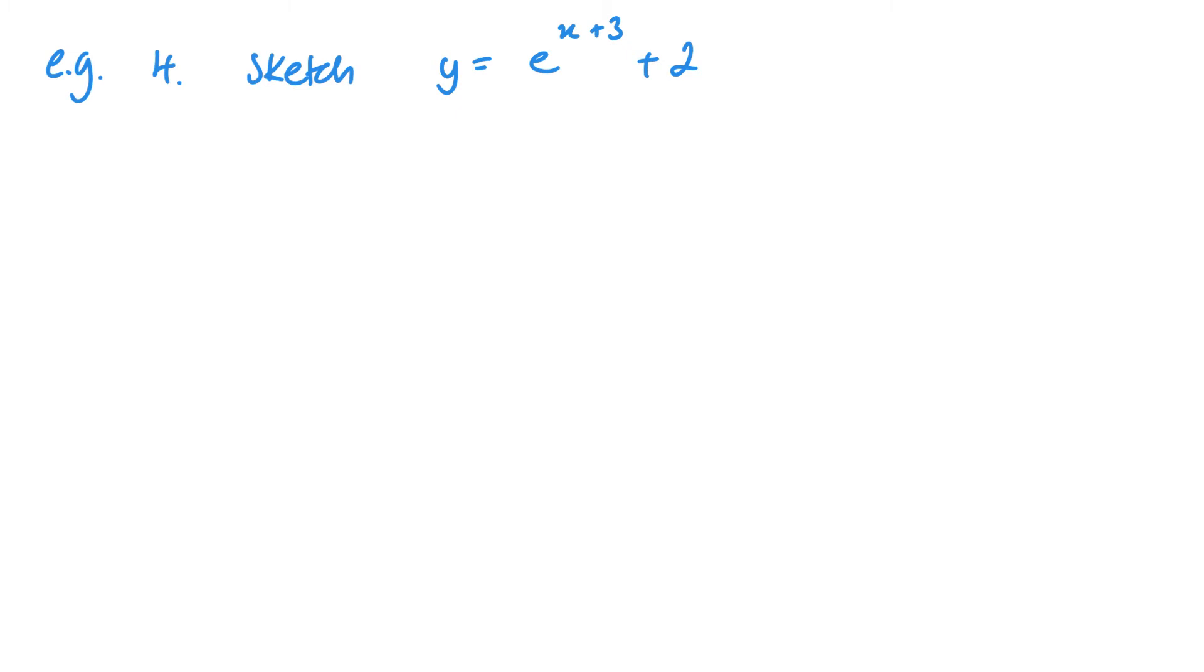Now, you also need to be able to sketch these graphs. You already know what they look like, what shape they should be. When you're sketching, you need to think about where the asymptote is. This is going to happen when it's a value that it can't possibly take. So if I look at this, this e to the power x plus 3, it's impossible for this to be 0. So if this whole term was 0, that would be where the asymptote lies. So y equals 2.